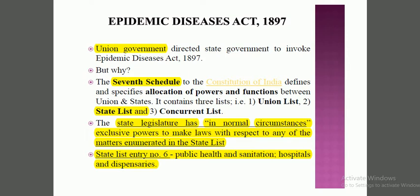Now we'll understand the basic act, and in the next video we'll talk about the amendment that has been introduced. So this is the Epidemic Diseases Act 1897. Note this down: the Union Government directed the State Government to invoke the Epidemic Diseases Act 1897. My question to you is — why did the Union Government not invoke this Act itself, and why did it ask the State Government to do so?